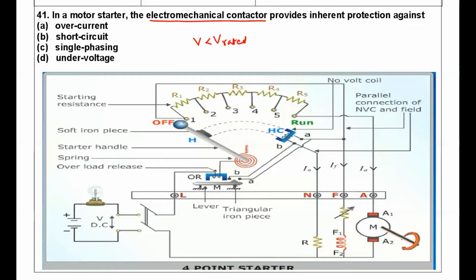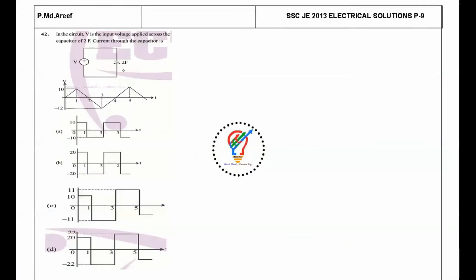When you want to start the DC motor, we will move this starter handle like this. At this point, whenever there's a low voltage condition or power failure condition, the holding coil releases this soft iron piece and the starter handle will revert back. So the answer is under-voltage or low voltage condition.